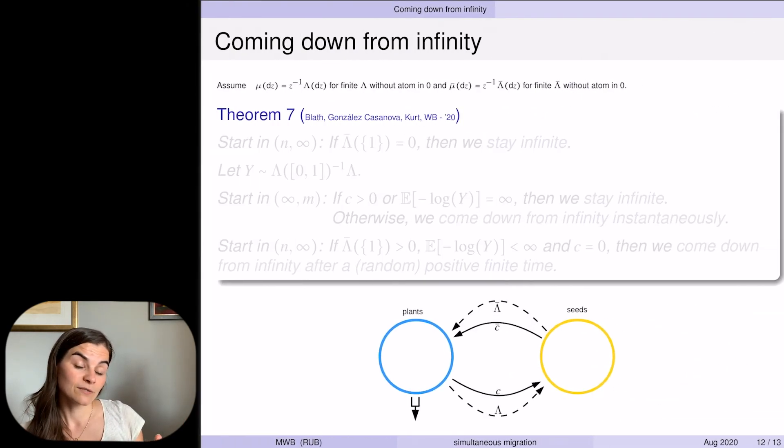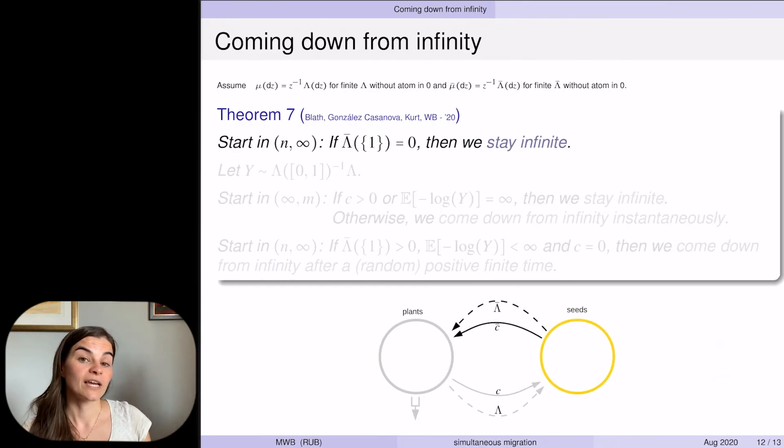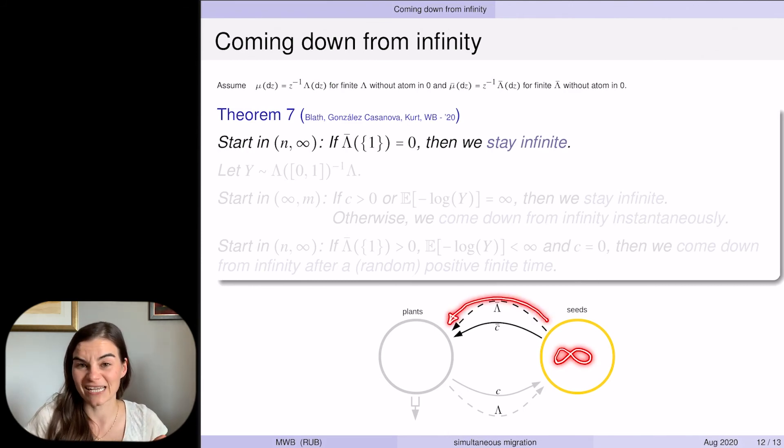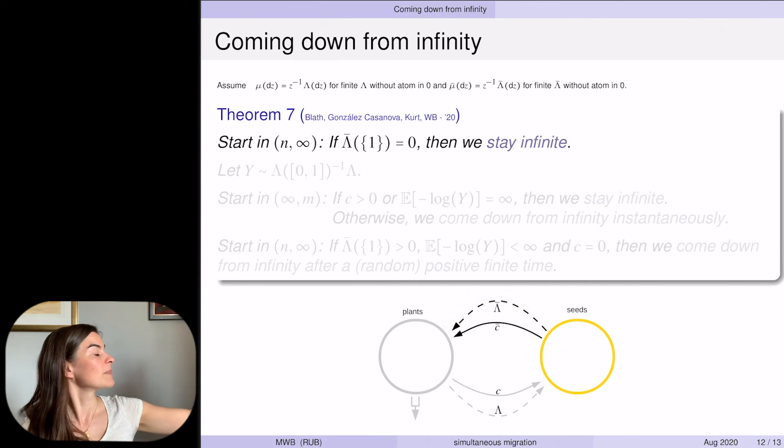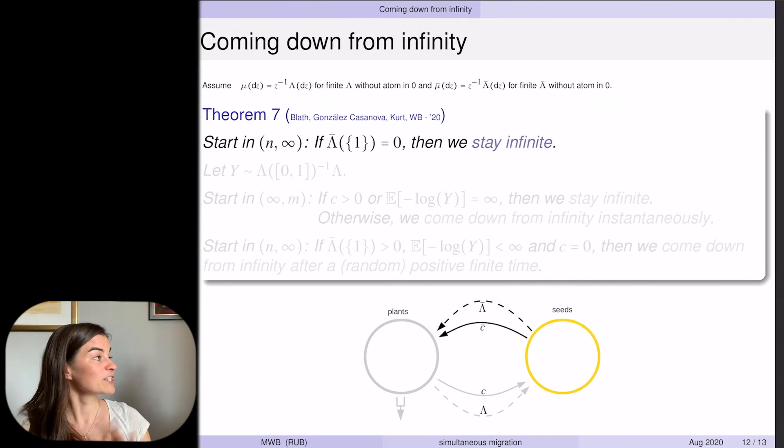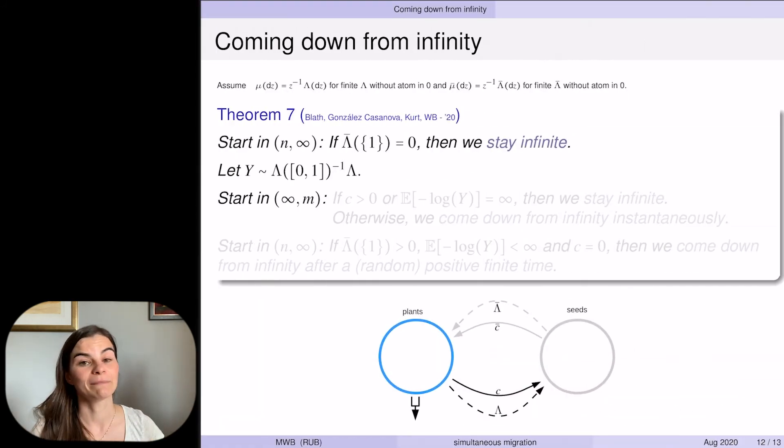What happens if we add simultaneous migration? The first observation actually remains true, because if we start with infinitely many seeds, since the simultaneous migration only moves positive fractions, unless that fraction is one, there will always be infinitely many left in the seed bank. So the picture gets more interesting when we start with infinitely many plants.